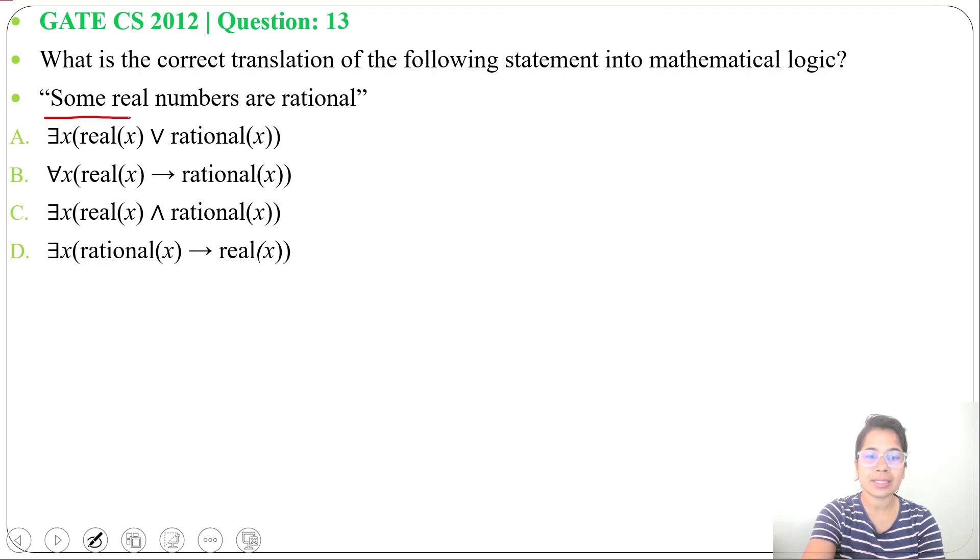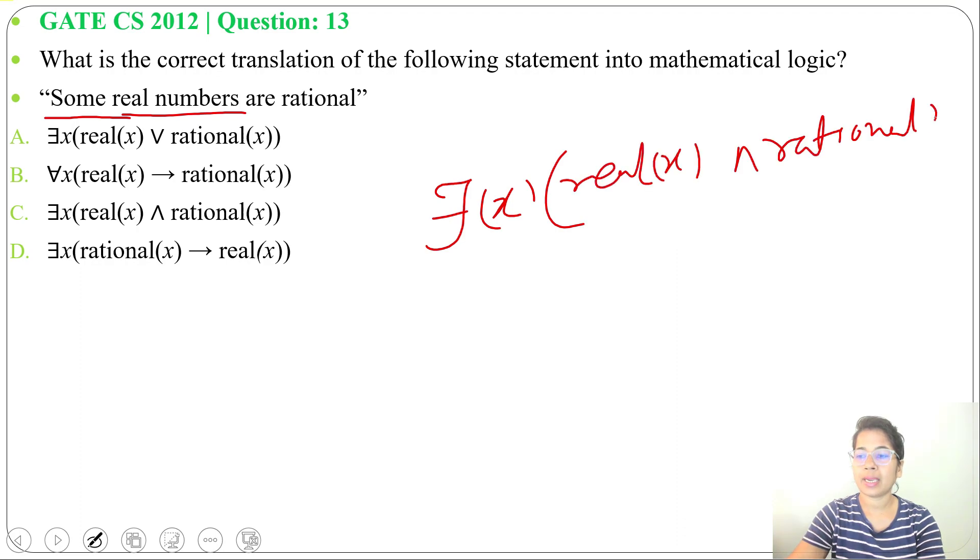Here it's written 'some,' so it will be there exists x such that x is real also x is rational. We can write real(x) ∧ rational(x). So there exists x, x is a real number also x is rational. It's present in option C, so the answer will be option C. Directly we found the formula for this statement.